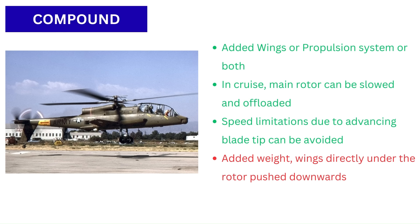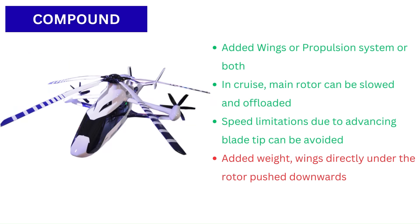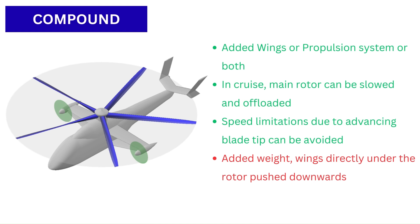By letting the wings take more lift and auxiliary propulsors provide thrust, the rotor can be slowed or offloaded. The Airbus Racer is a demonstrator designed to cruise around 400 kilometers per hour using a main rotor, box wing configuration, and lateral pusher propellers to combine speed, range, and lower fuel burn. The disadvantages of this type are added weight and the problem that the wing directly below the main rotor is pushed downwards during hovering. This is why the wings are kept as small as possible.